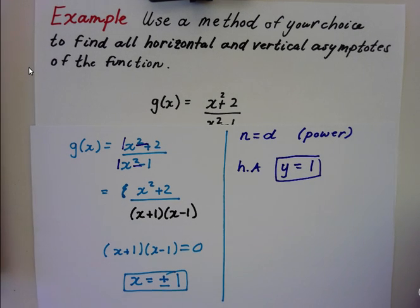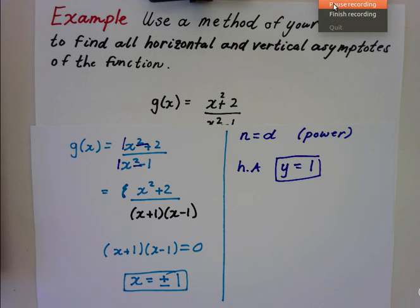So that's just two quick examples of rational functions of how to find the horizontal and vertical asymptote. If you guys have any questions or comments, let me know, and we'll see you next time.